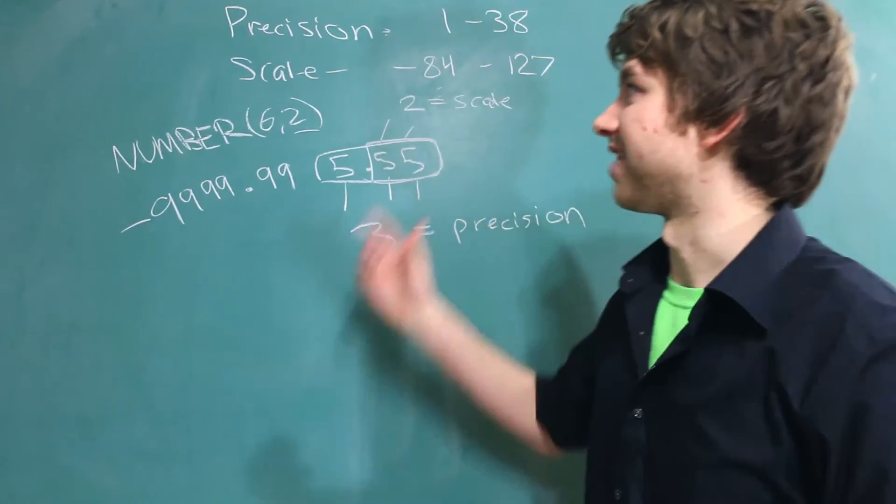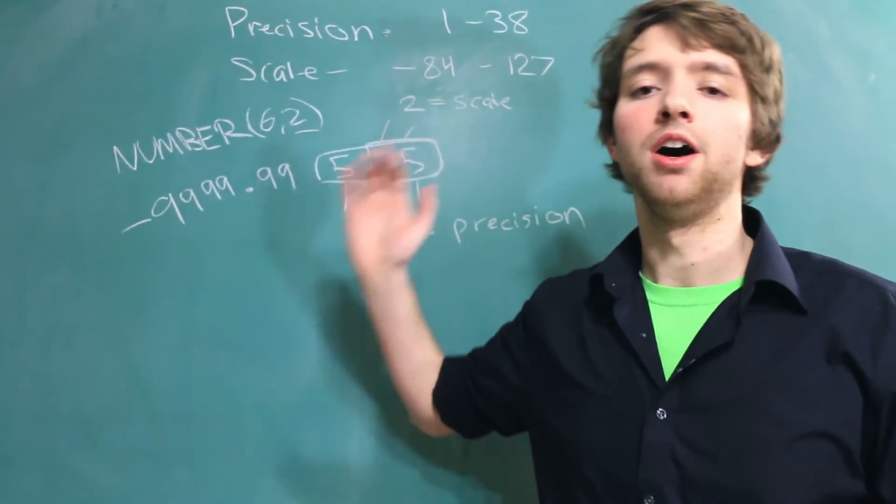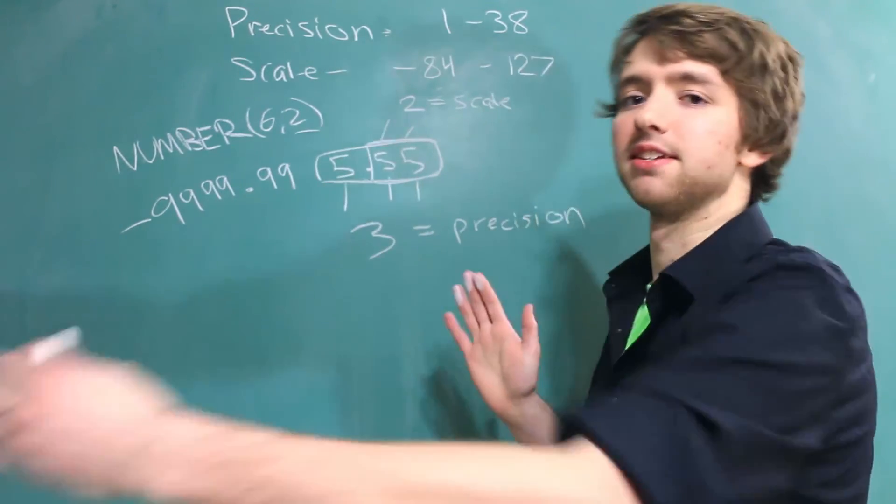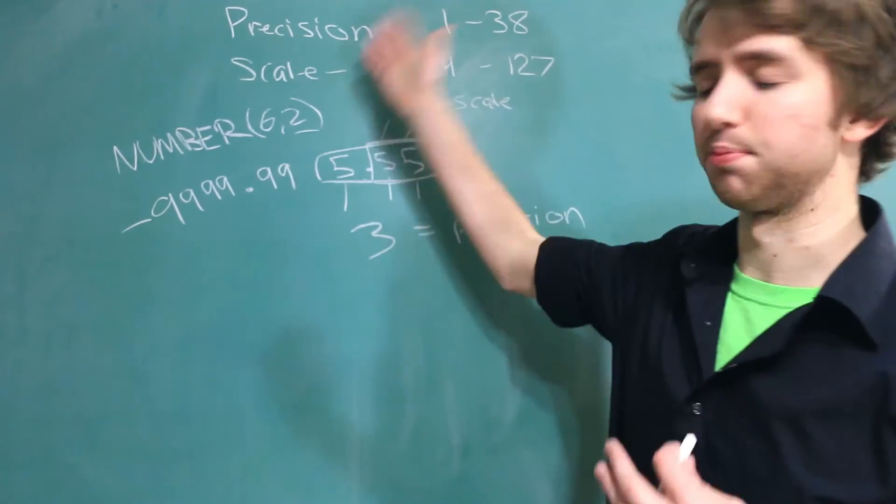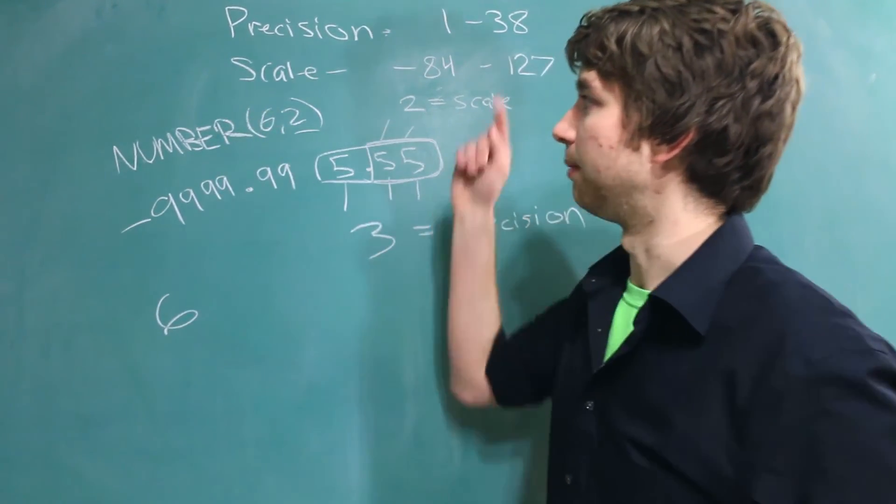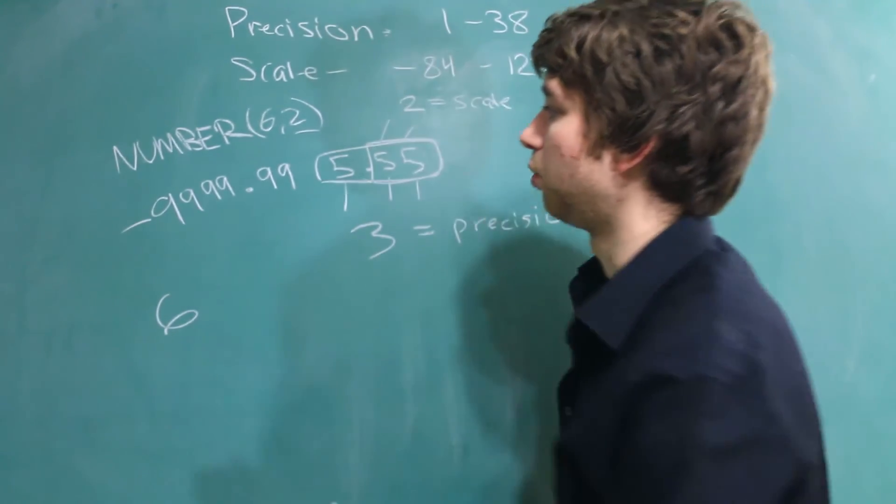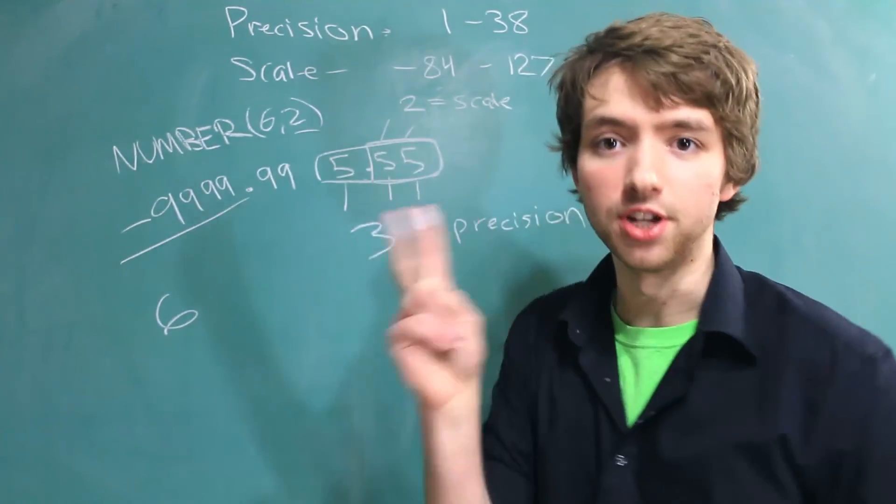The biggest thing to take away from this is that if you're going to specify the precision and scale, the scale affects the size of the biggest number. Because if we have let's say a precision of 6, like this example, and we say a scale of 2, well we are cutting the max size of our number by 2 digits.